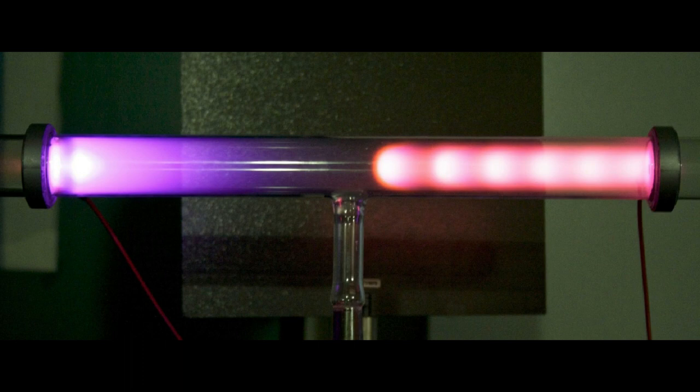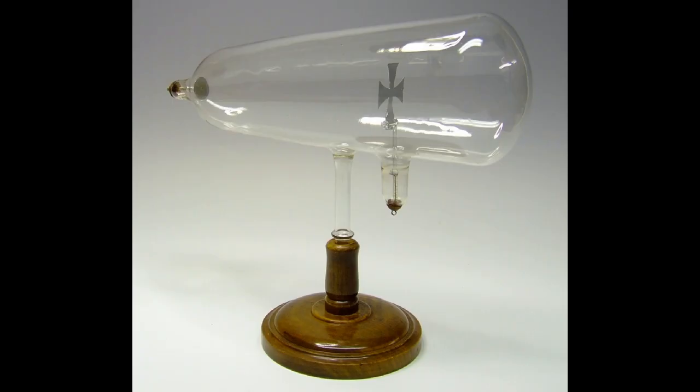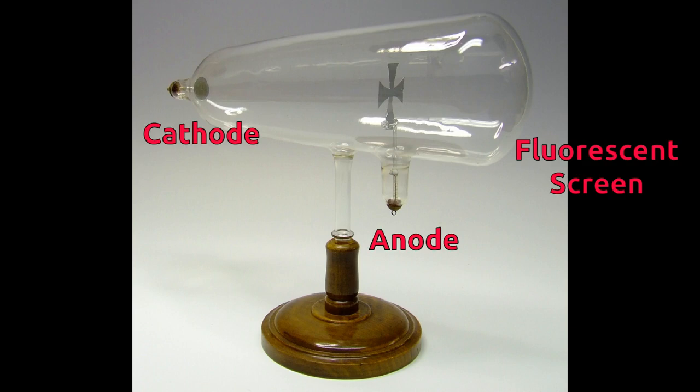Discovery of electron. William Crookes observed a little glow on the fluorescent screen which was insufficient to perform any analysis. To understand more, J.J. Thompson designed the experiment differently.